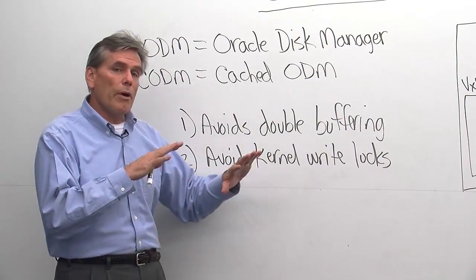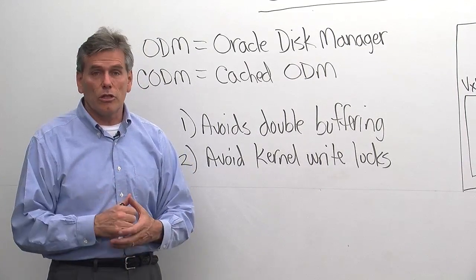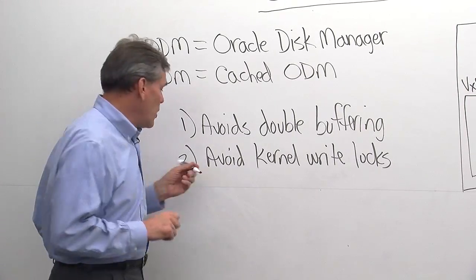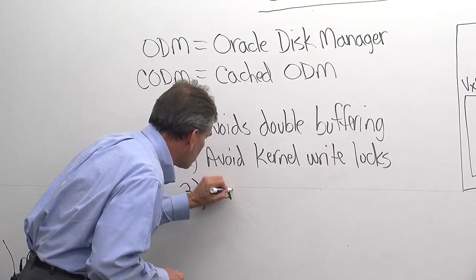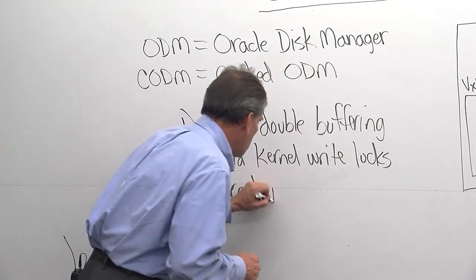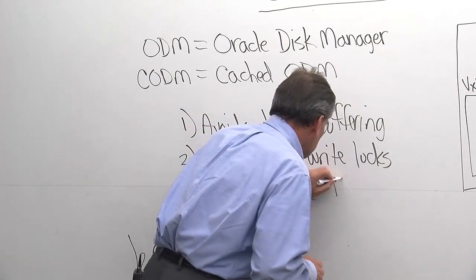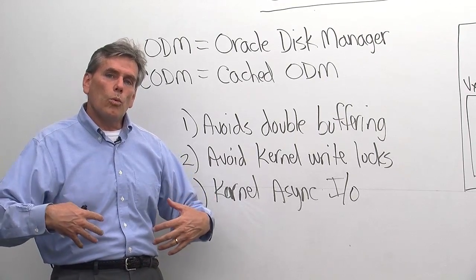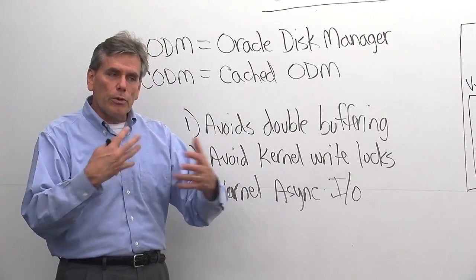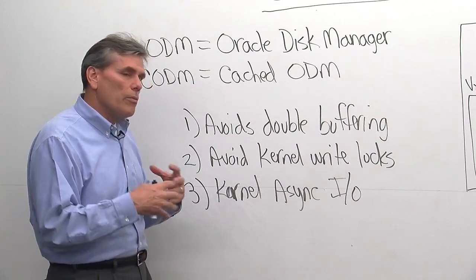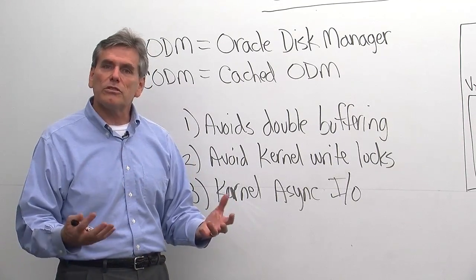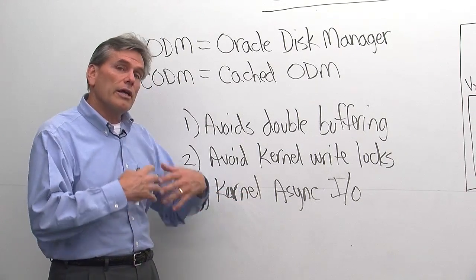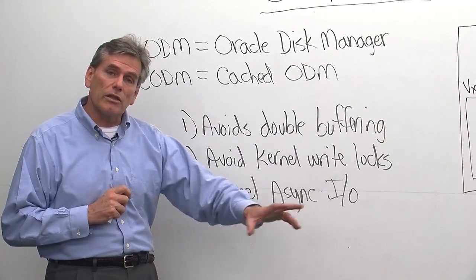By using ODM, we bypass the kernel write locks and basically allow Oracle to do the locking. The third area is we allow kernel asynchronous I/O. Similar to the write locks, databases really like to have multiple readers and multiple writers simultaneously. With normal file opens in UNIX, that can't happen. So with kernel asynchronous I/O, we get down to the kernel level and we allow it all to happen.